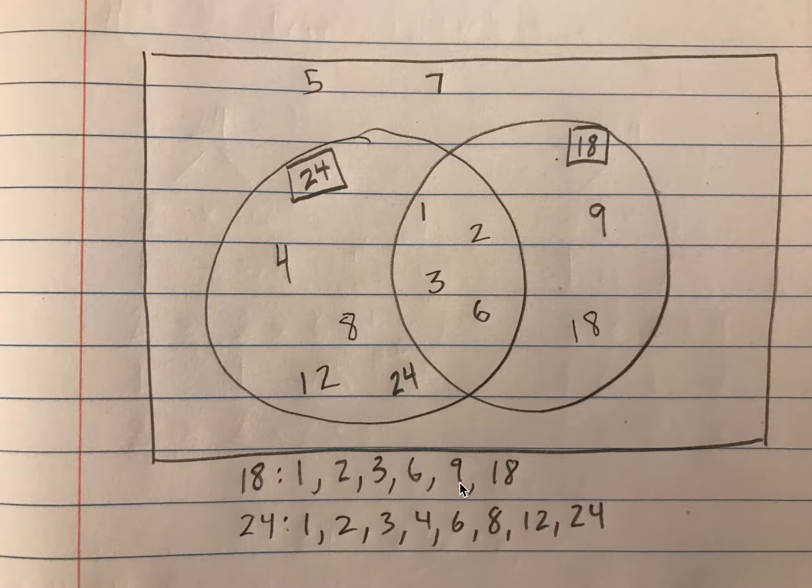1, 2, 3, 6, 9, and 18. 24 has 1, 2, 3, 4, 6, 8, 12, and 24.